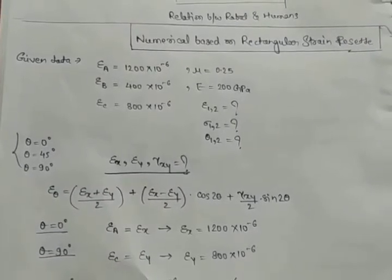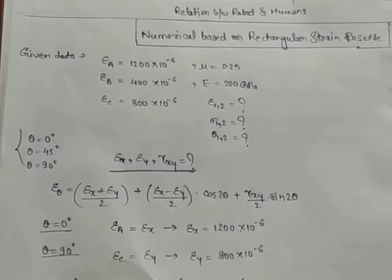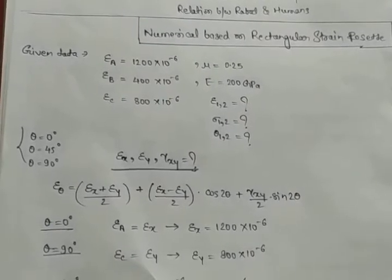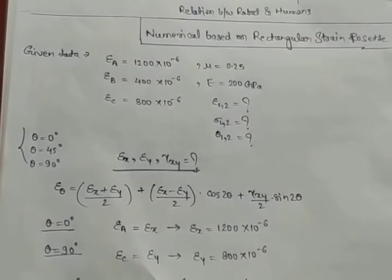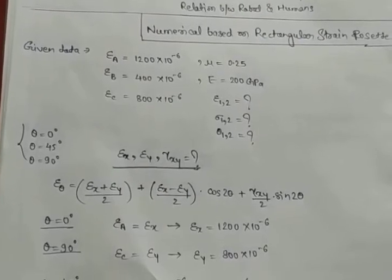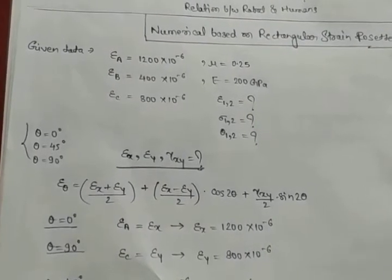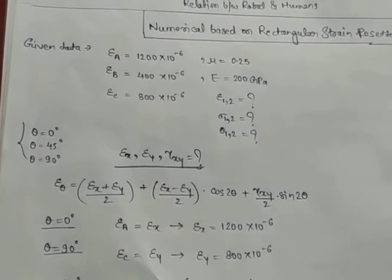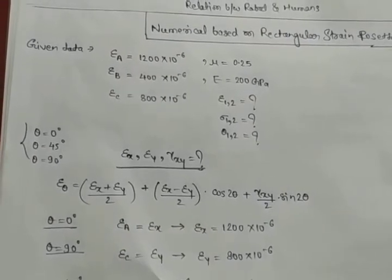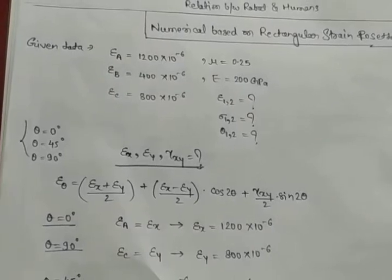We consider some given data: epsilon_a is equal to 1200 × 10⁻⁶, epsilon_b is equal to 400 × 10⁻⁶, and epsilon_c is equal to 800 × 10⁻⁶. The Poisson's ratio mu value here is 0.25 and E is equal to 200 GPa.